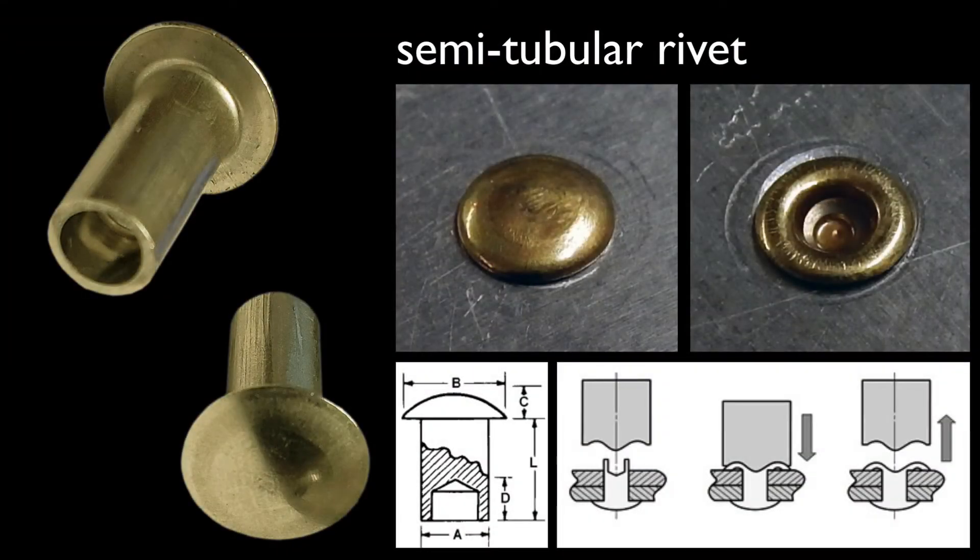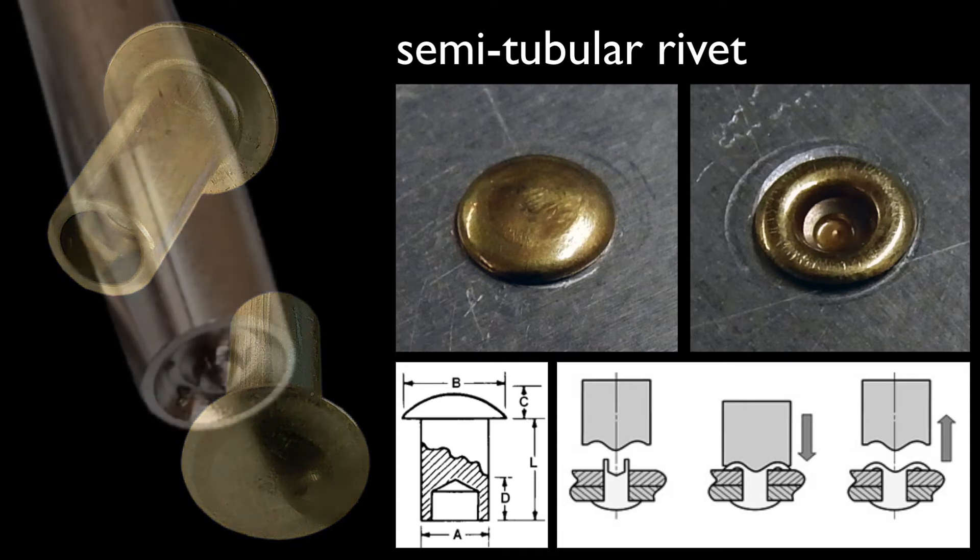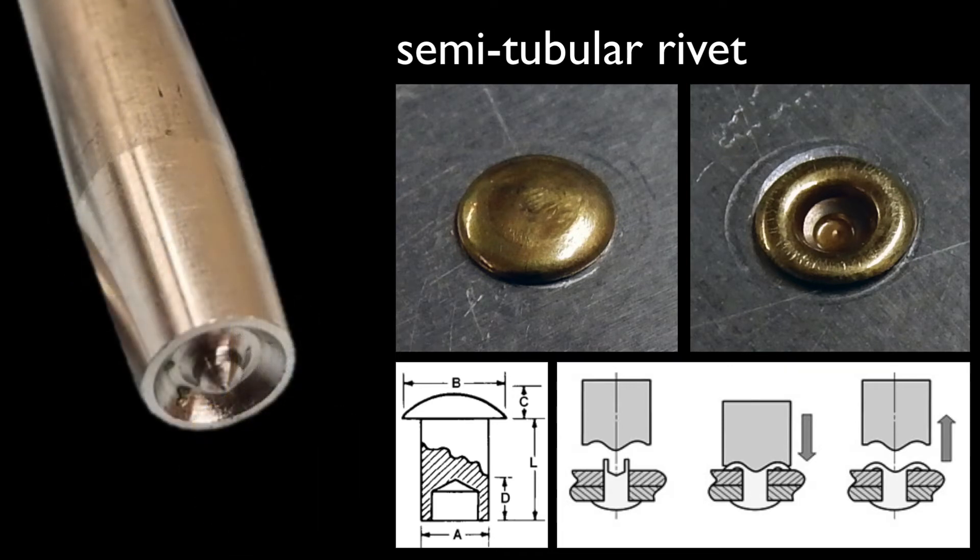The other kind of rivet I want to talk about is called not a solid rivet and not a tubular rivet, but a semi-tubular rivet. Semi-tubular rivets have a head, a solid head, and then a piece of tubing. And you put it in and flare that tubing over. So you get all of the elegance of a perfect little finished domed head and all of the sort of neat finish of a rolled tubular rivet. And these are designed to be set with a rivet set.